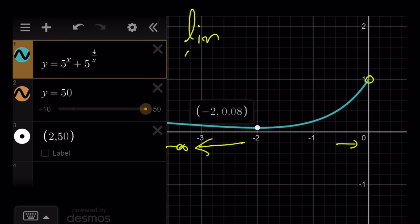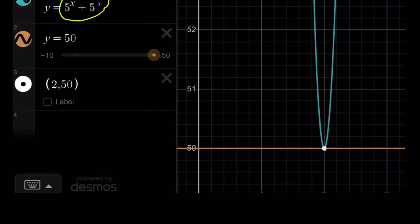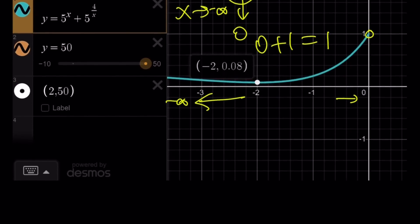You can take the limit from the left hand side as x approaches 0 from the left, y approaches 1. But as x approaches negative infinity, the limit of 5 to the x plus 5 to the 4 over x becomes 1 over 5 to the infinity, which is 0. 4 over negative infinity approaches 0, so this approaches 5 to the power 0. 0 plus 1 is 1, so our function approaches 1 as x approaches negative infinity, which means it's not going to go up and intersect y equals 50. We only got one positive solution, which is at the minimum for positive x values.